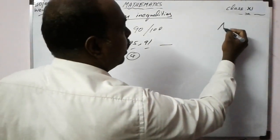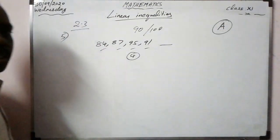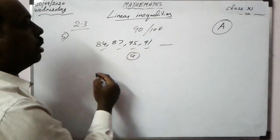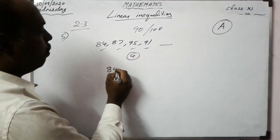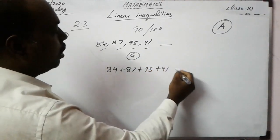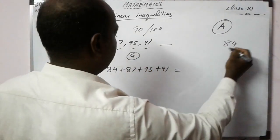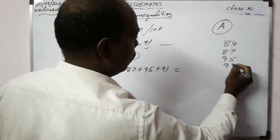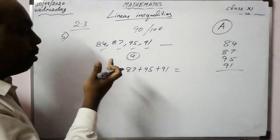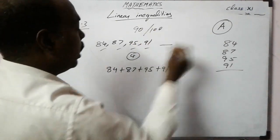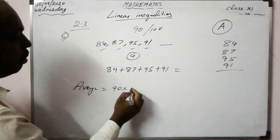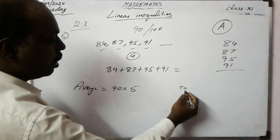For an A grade, the average must be at least 90. So the total marks across 5 subjects must be at least 90 × 5 = 450. The sum of the first four subjects is 84 + 87 + 95 + 91.